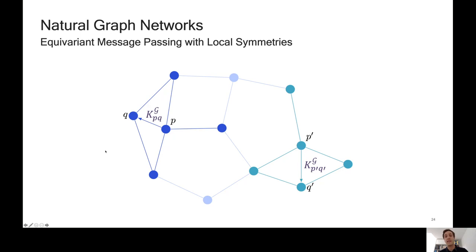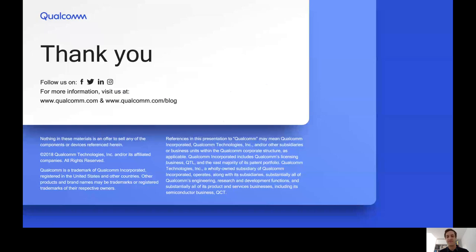And finally, a short plug about something we're very excited about right now, which is called natural graph networks that will appear in archive soon as well. Here, the idea is to generalize graph networks, again, thinking about the symmetries or local symmetries gauge symmetries, if you will, on a graph in order to improve graph networks. All right, and that's it. Thank you for your attention.